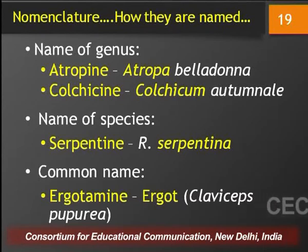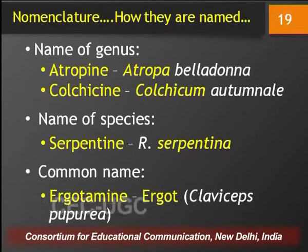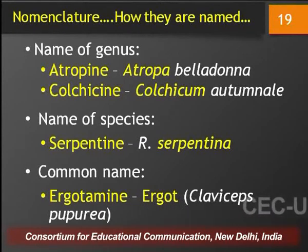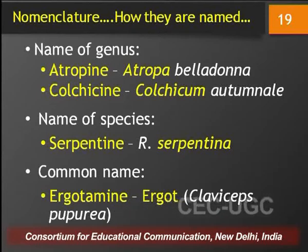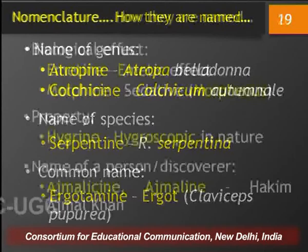What are the various methods by which we give names to the alkaloids? The name of an alkaloid can be based upon the name of the genus — for example atropine, obtained from Atropa belladonna, is named after the genus Atropa. Similarly, colchicine is based on the genus name Colchicum. Sometimes alkaloids are named based on the species — for example serpentine, based on the species name of Rauwolfia serpentina. Alkaloids can also be named based on the common name of their source — for example ergotamine and ergometrine, which are alkaloids derived from the fungus Claviceps purpurea, commonly known as ergot.